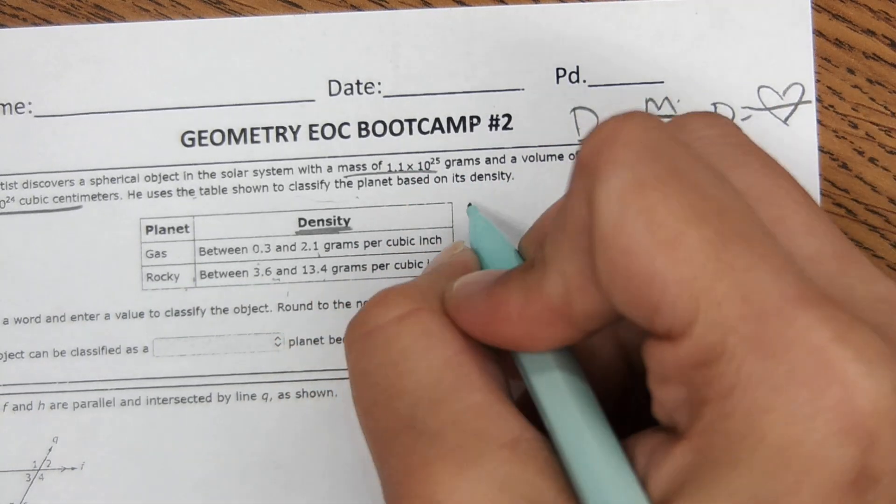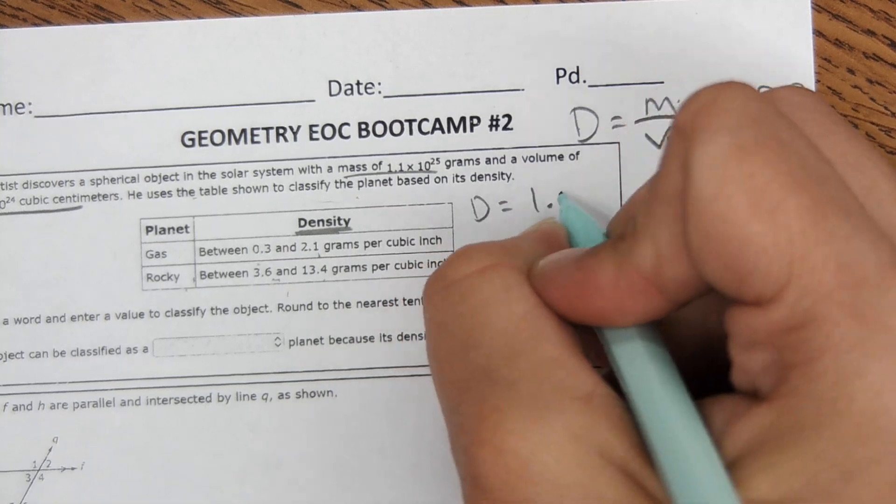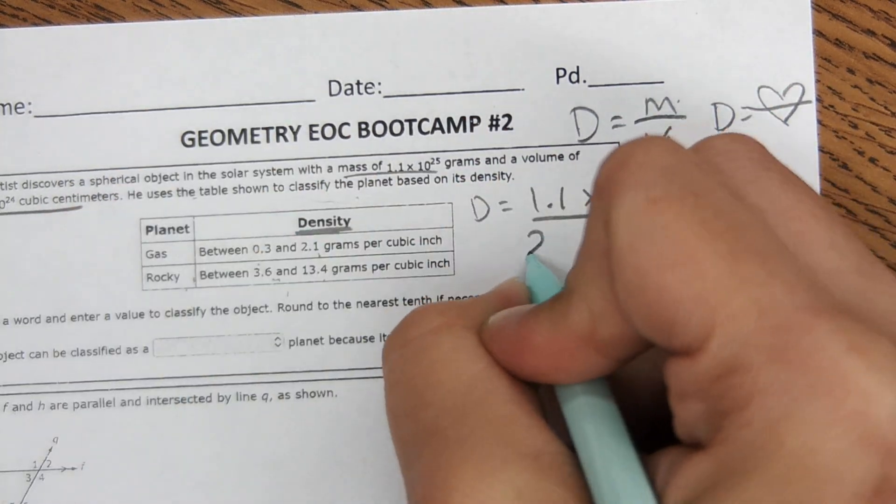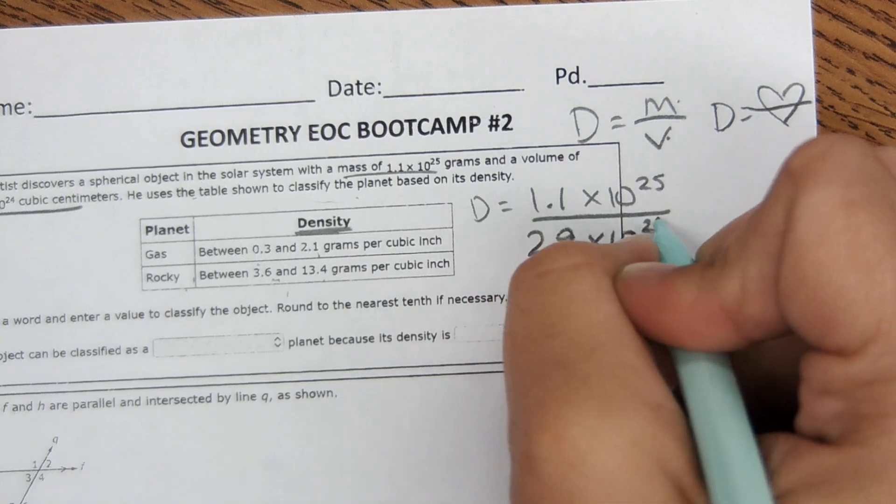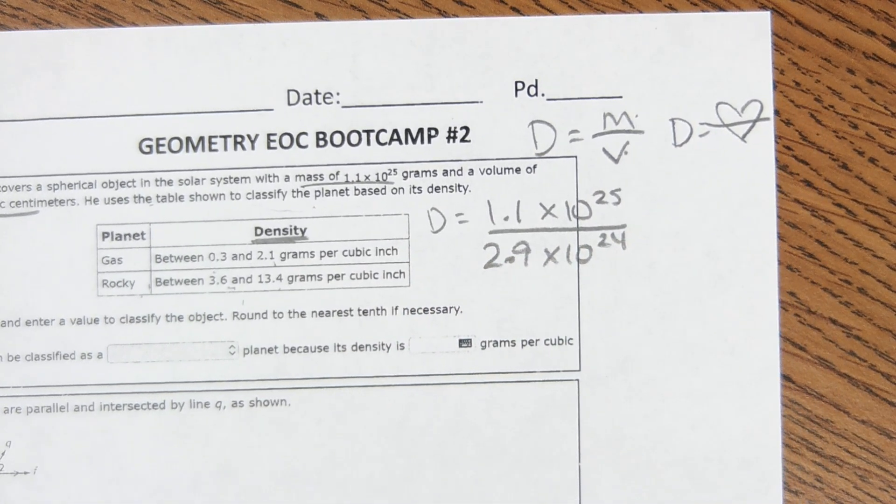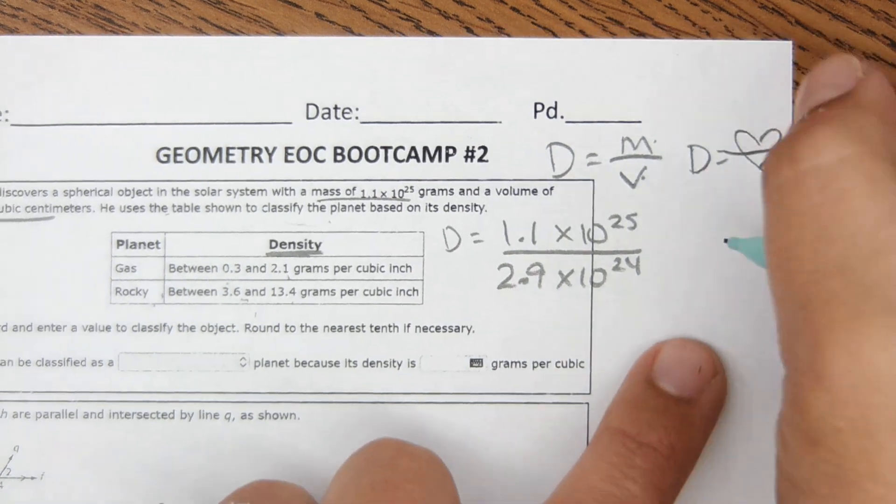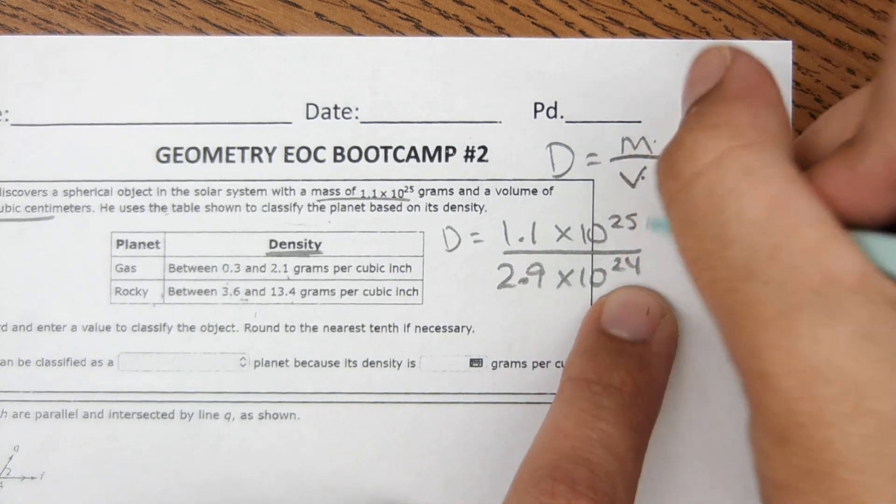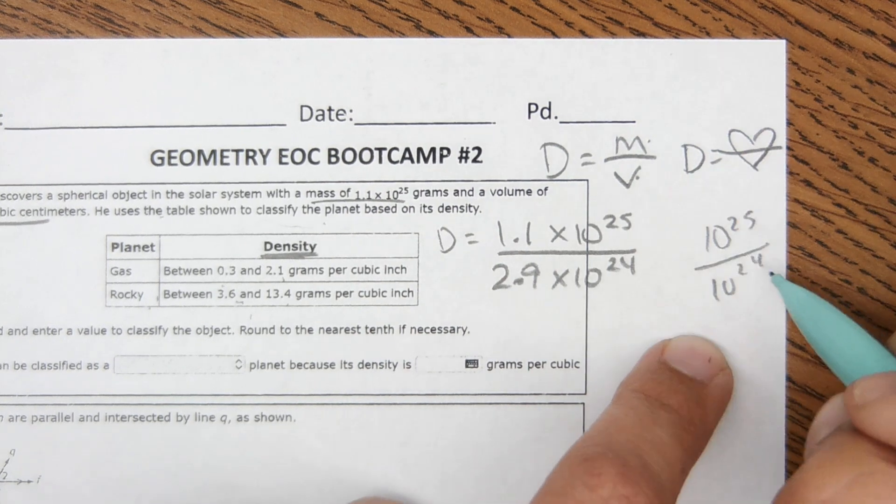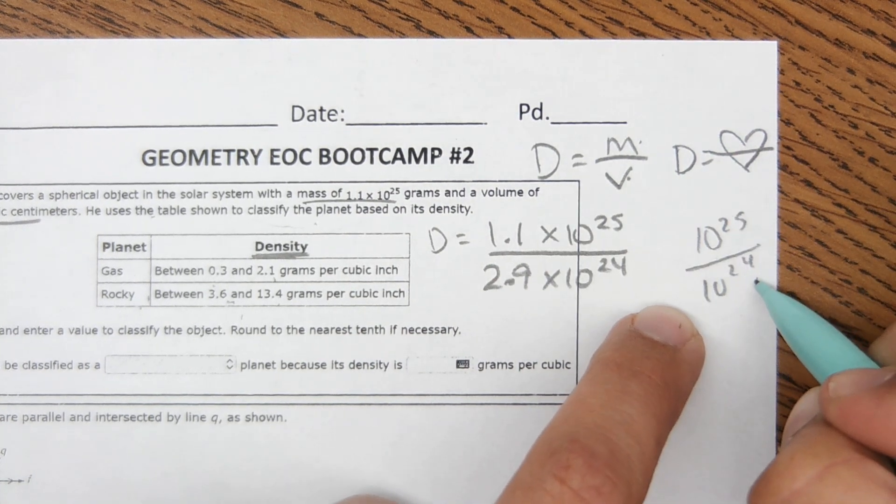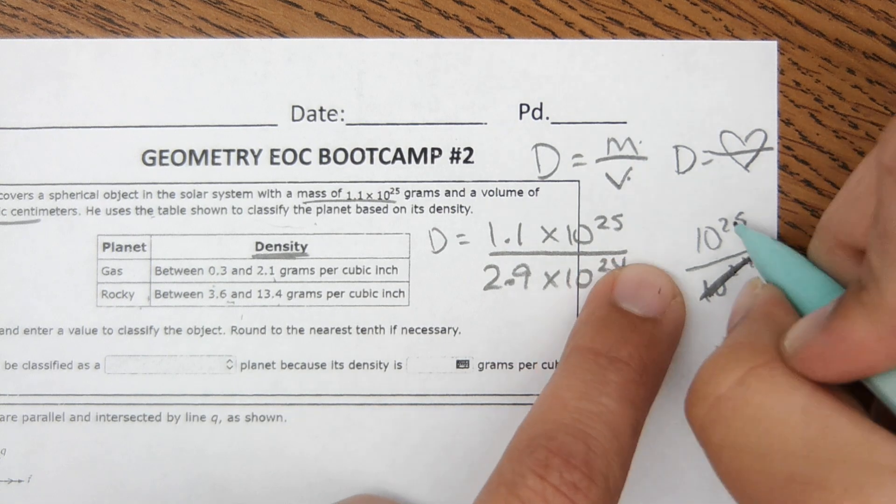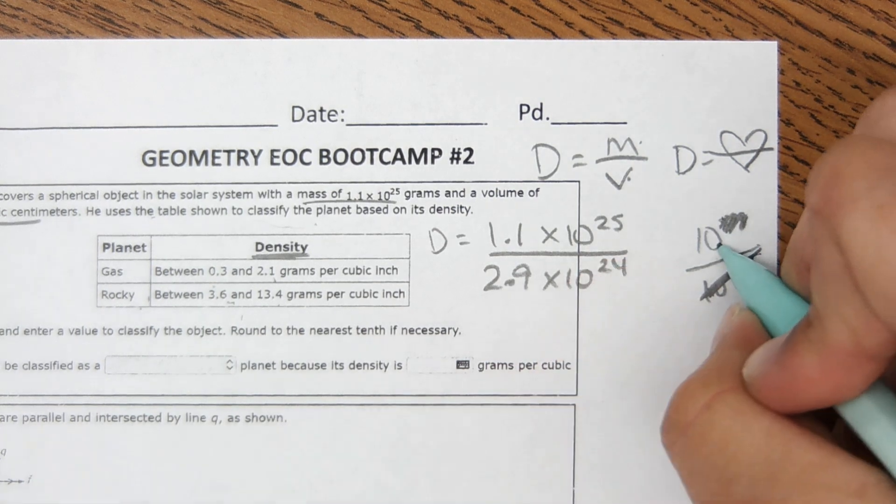So density equals mass, which we get 1.1 times 10 to the 25th power over volume, 2.9 times 10 to the 24th. For this, I don't know if you remember how to simplify this, but 10 to the 25th over 10 to the 24th. You could subtract these exponents or just know that 24 tens will cancel out and it just leaves one 10 left up here.